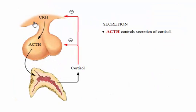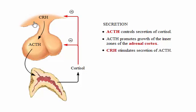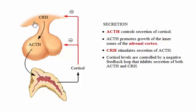ACTH, or corticotropin, controls secretion of cortisol and promotes the growth of the inner zones of the adrenal cortex. Corticotropin-releasing hormone stimulates secretion of ACTH. Negative feedback from cortisol inhibits the secretion of both ACTH and corticotropin-releasing hormone.